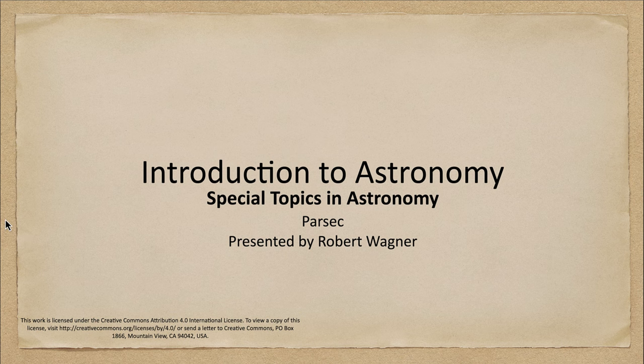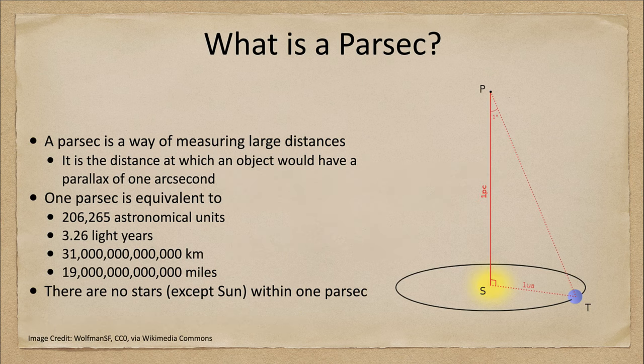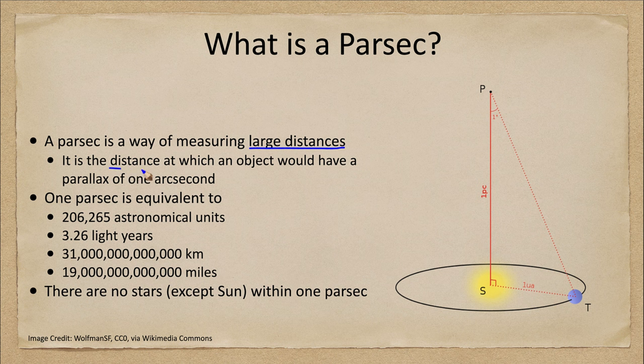So what is a parsec? Well, it is a way of measuring large distances. Distances in astronomy are very large — if we try to measure the distance to the nearest star in kilometers, it would be tens of trillions of kilometers. Very large numbers that our mind does not like to try to wrap itself around, so we try to simplify these by using other units that measure very large distances.